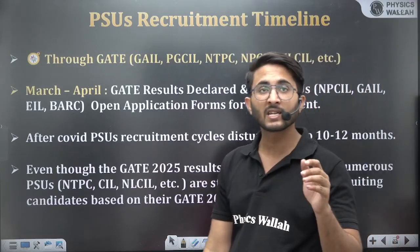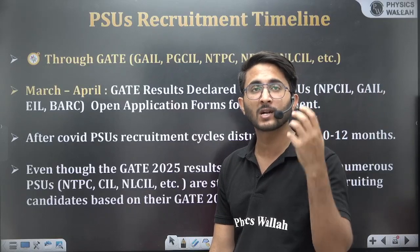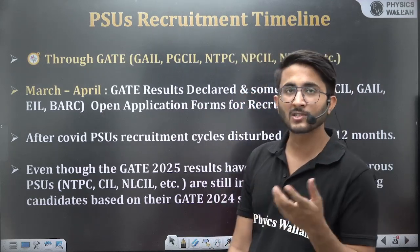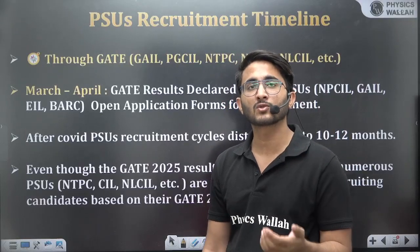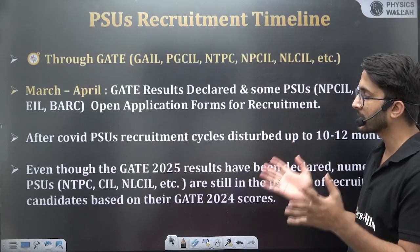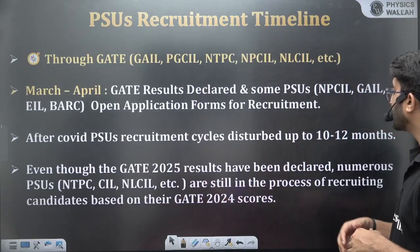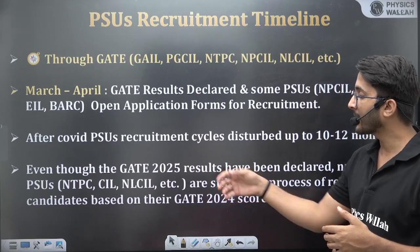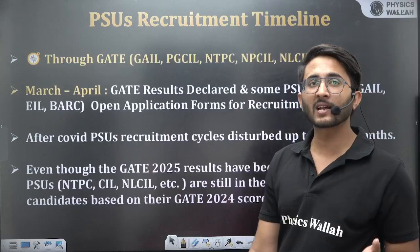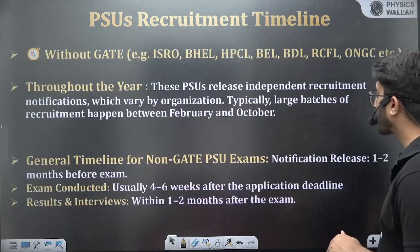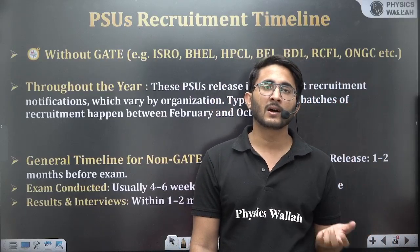After COVID, many PSUs' recruitment cycles got disturbed by up to 12 months. For example, after GATE 24 examinations, students waited approximately one year before the NTPC recruitment came in late January. Students are still waiting for the first merit list, which is approximately 3-4 months away. Once the complete GATE 24-based recruitment is finished, PSUs will initiate GATE 25-based recruitment. Even though GATE 25 results have been declared, PSUs like NTPC, CIL, and NLCIL are still recruiting based on GATE 24 scorecard.